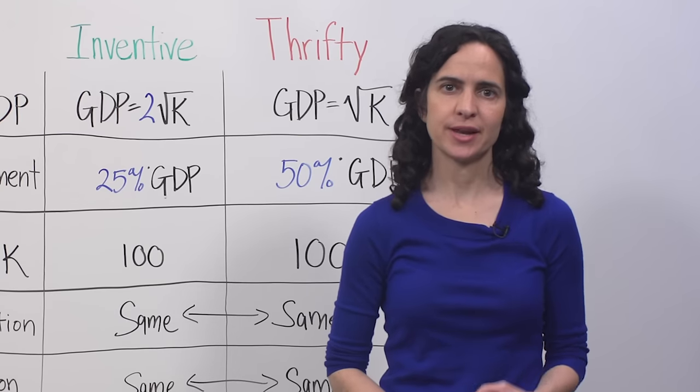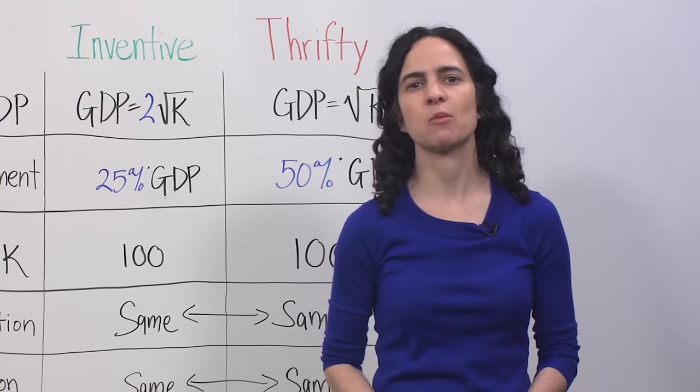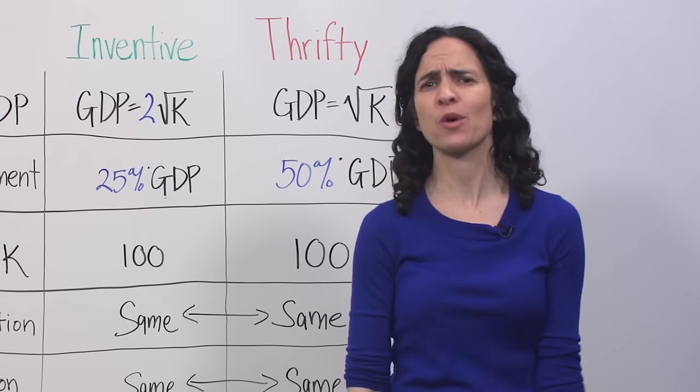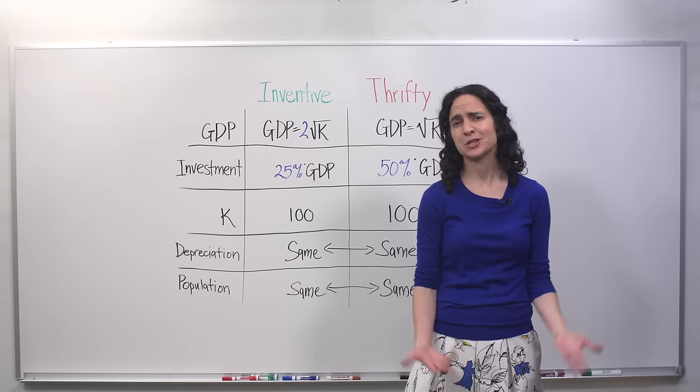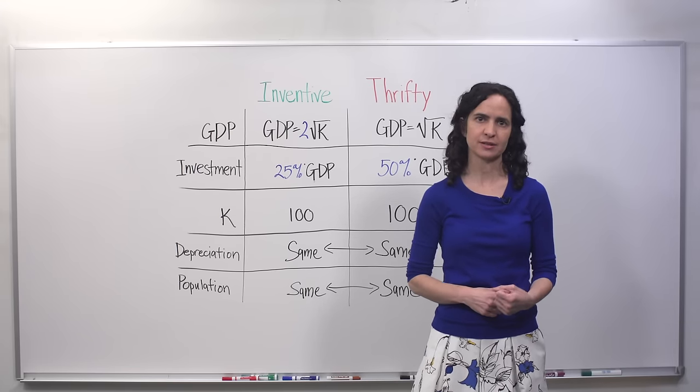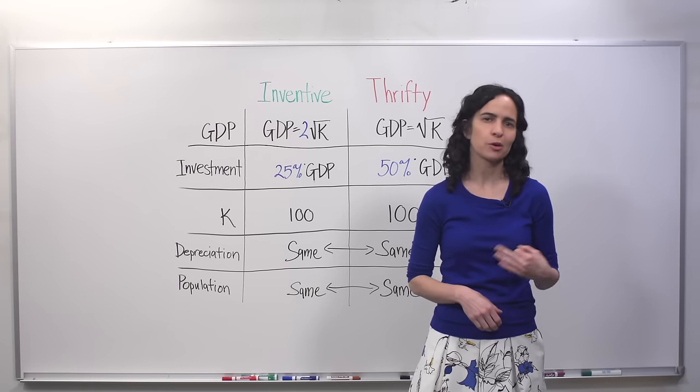The trickiest part here is translating what an ordinary citizen cares about into something the Solow model actually tracks. Solow doesn't measure faster Wi-Fi, even though we all care about that. I mean sure, we can and we will look at how much GDP each country has, how much it's investing in its capital stock, the usual Solow suspects.